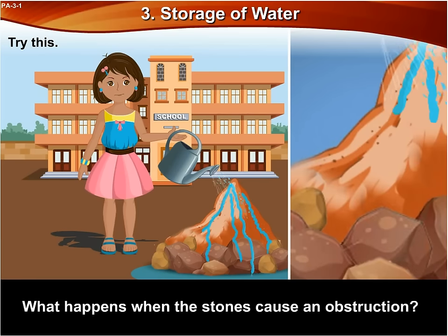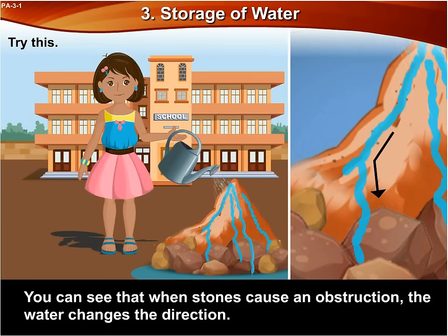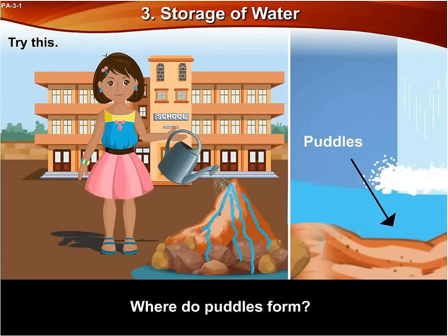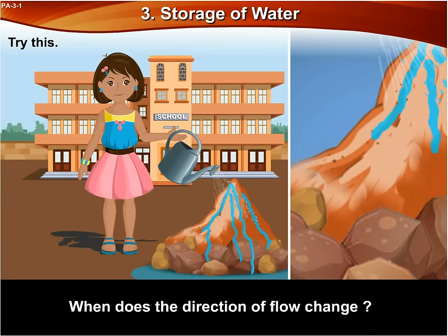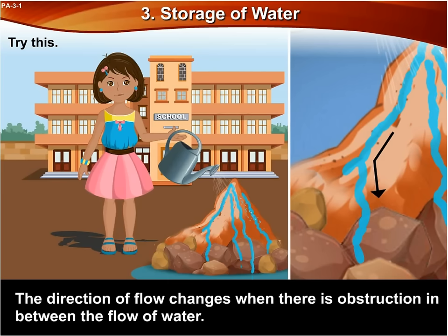What happens when the stones cause an obstruction? You can see that when stones cause an obstruction, the water changes direction. Where do puddles form? The puddles are formed at the places where small pits form. When does the direction of flow change? The direction of flow changes when there is an obstruction in between the flow of water.